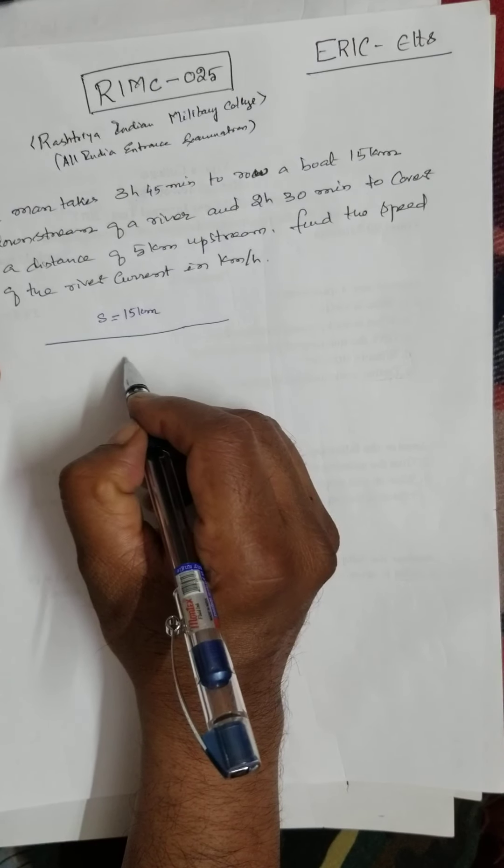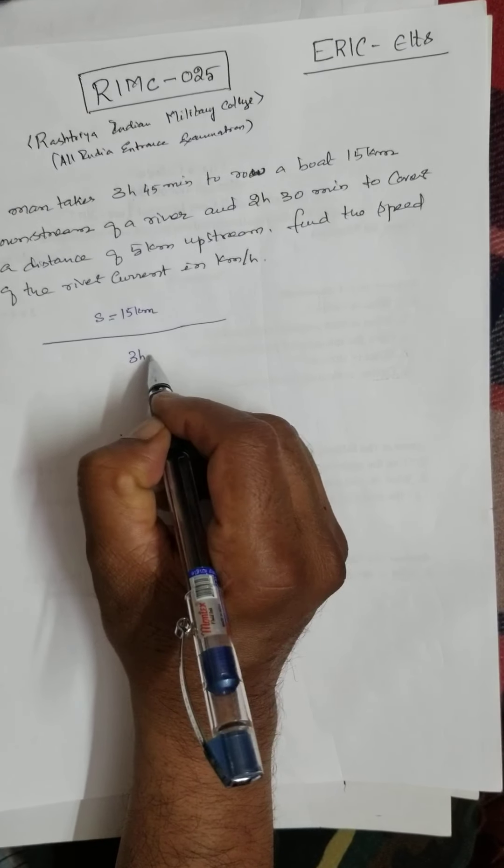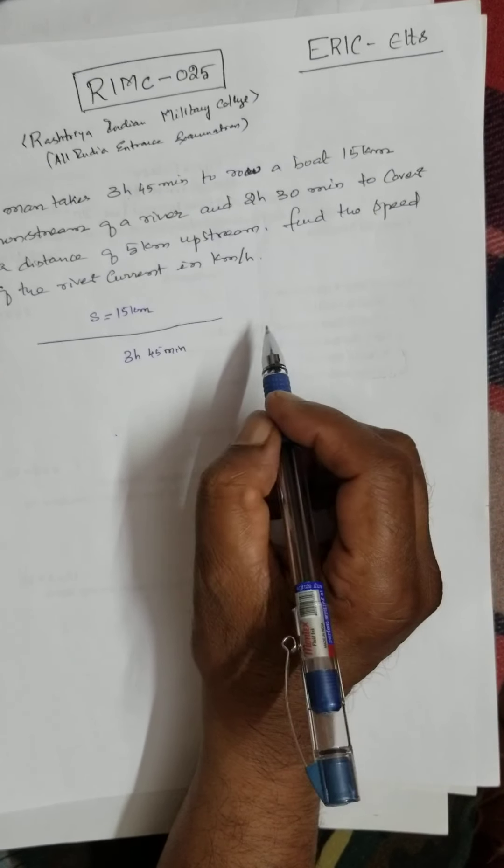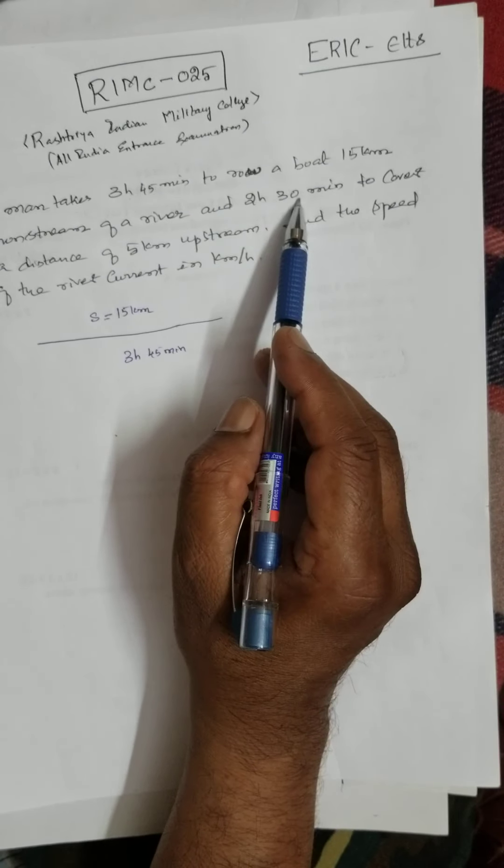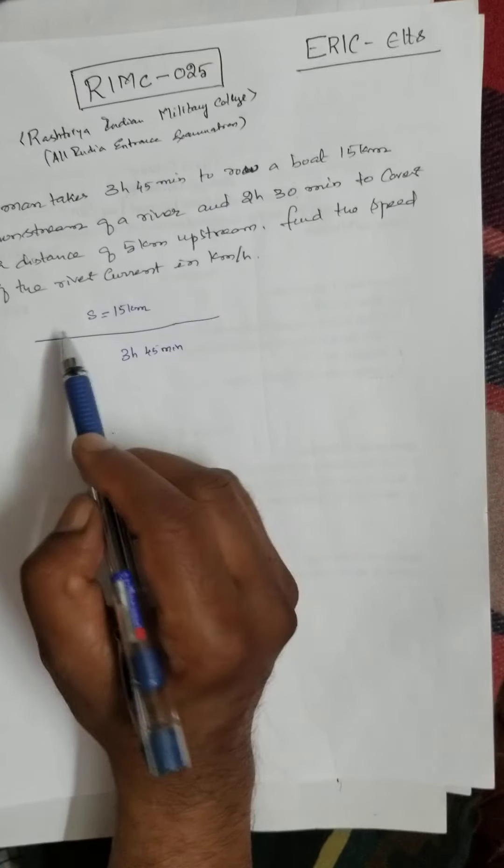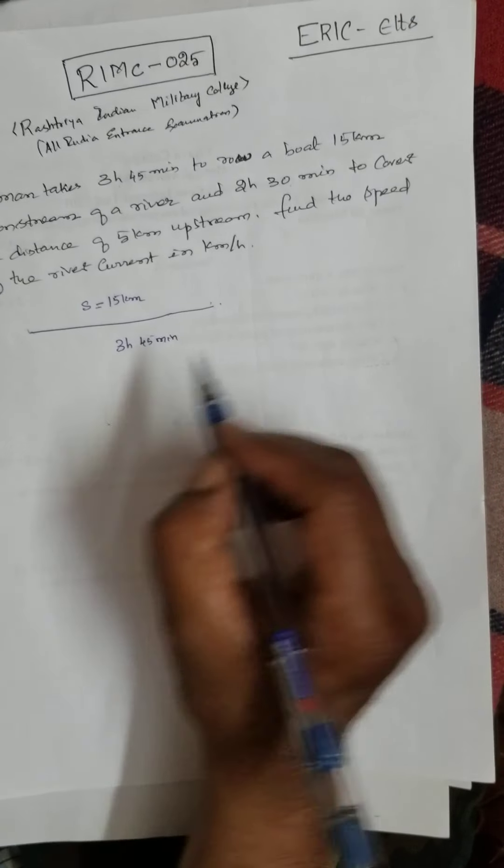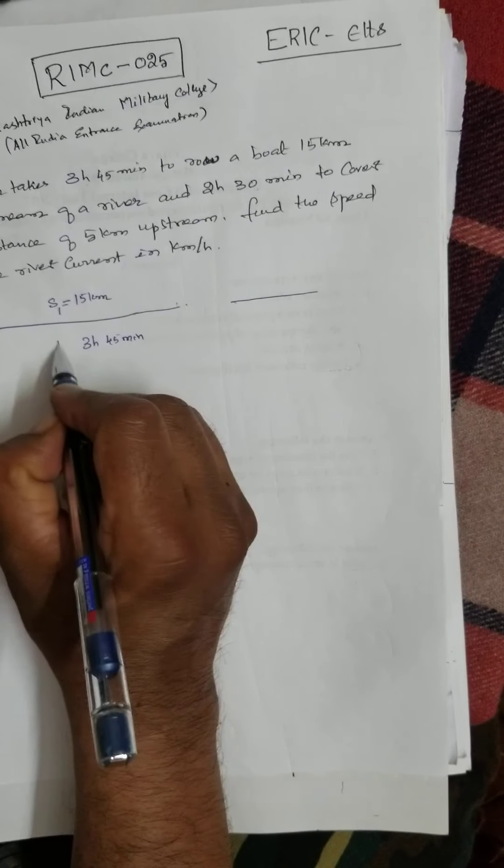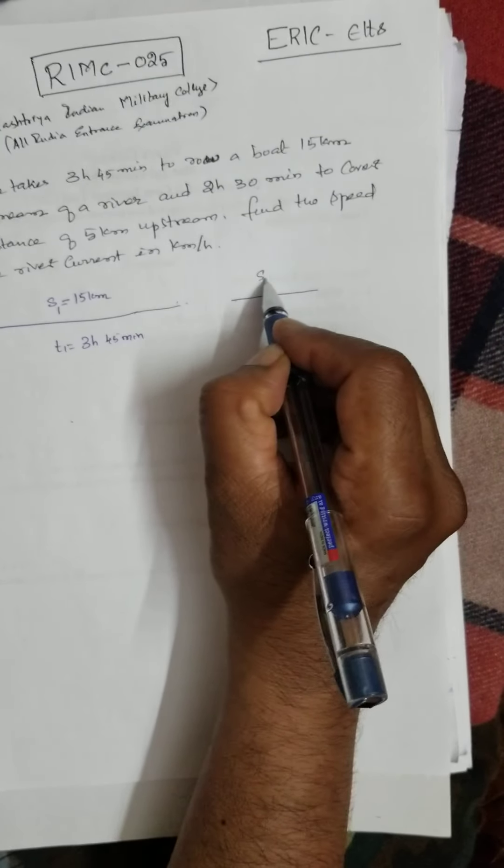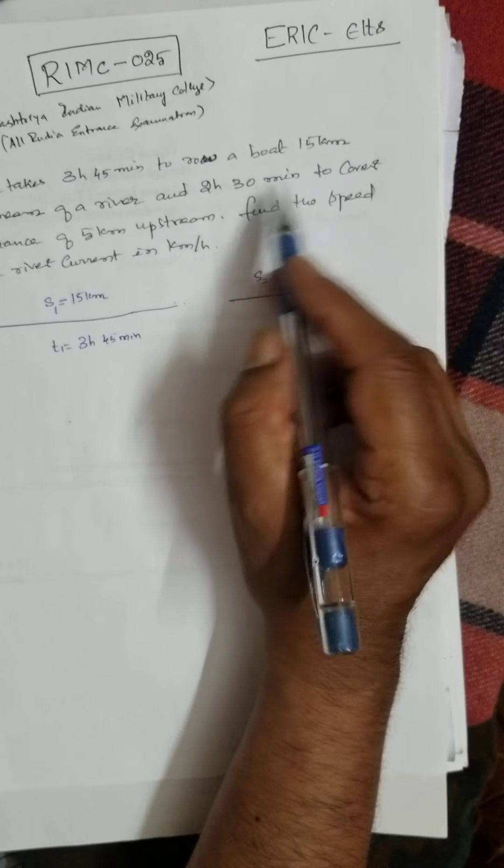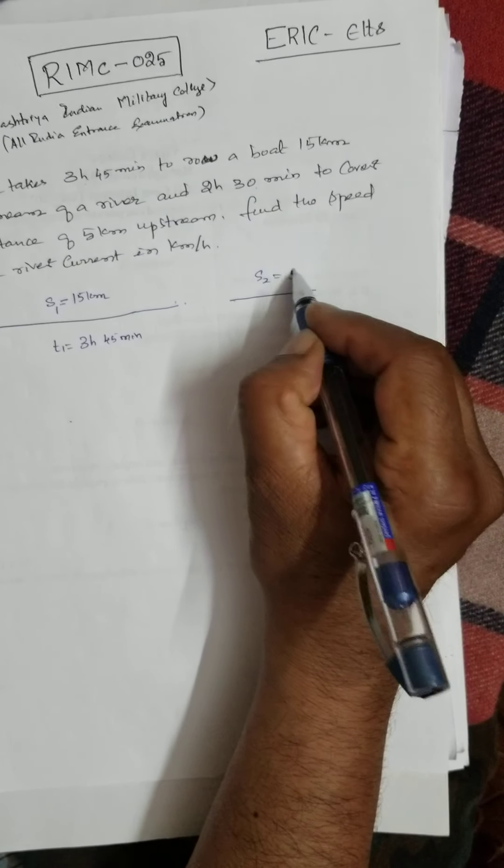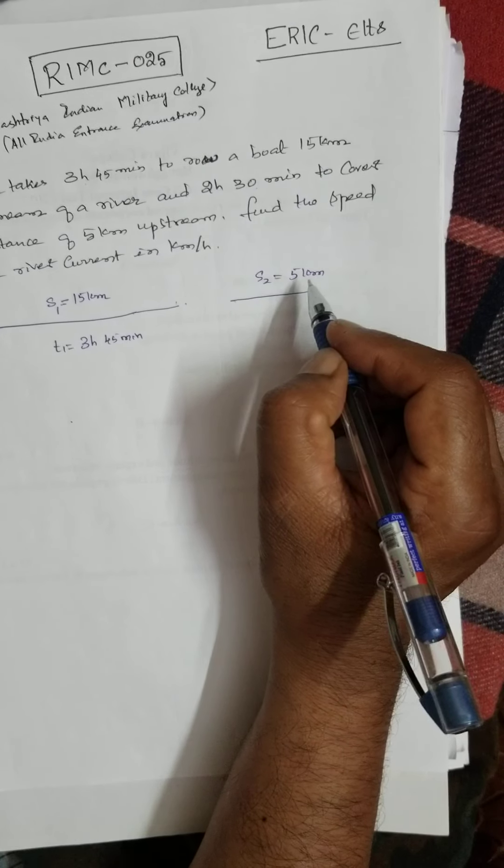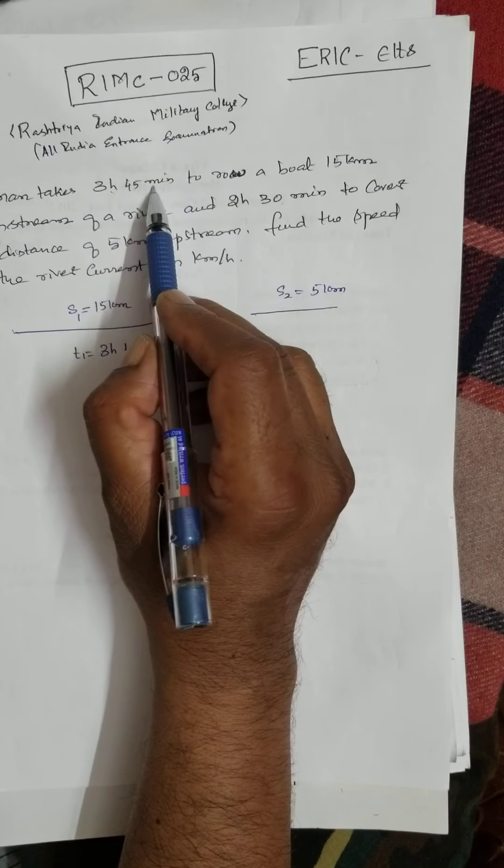And he takes time, what is the time? 3 hours, 45 minutes, and take 2 hours, 30 minutes to cover a distance of 5 meters. The distances are not same. Therefore, he has a different distance. This is S1, T1, S2 is how much? He covers a distance of 5 kilometers. This is what? 3 hours, 45 minutes.